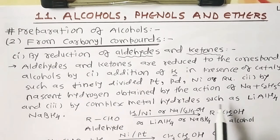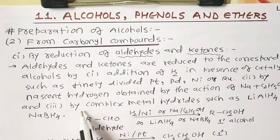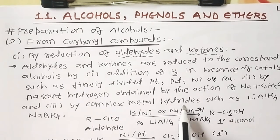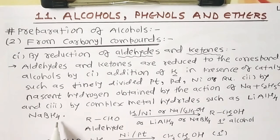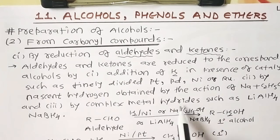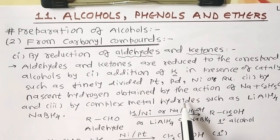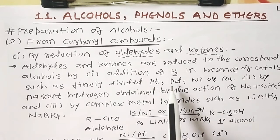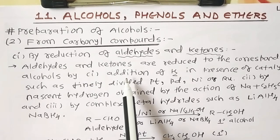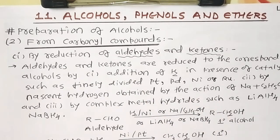The next reducing agent is complex metal hydrides, such as lithium aluminium hydride (LiAlH₄) or sodium borohydride (NaBH₄). The meaning of hydride here is H⁻. They donate H⁻ to the compound, making them another type of reducing agent. So in this portion we have three different types of reducing agents.